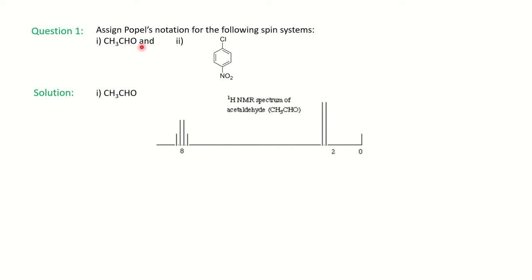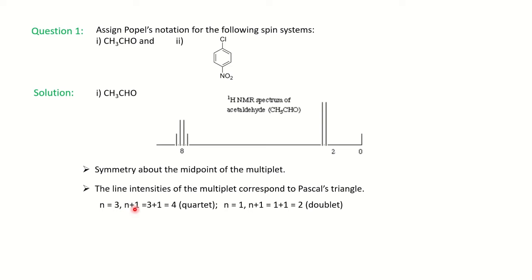So two signals are there with their multiplicity and now we have to see whether it is first order or second order spectra to give the Popel's notation. So we will see first point which we have to see: symmetry about the midpoint of the multiplet. You can notice here, this is the midpoint where I am indicating with the laser. So it is the midpoint and you have a symmetry. Similarly for doublet, you have a middle point and we have a symmetry. So we can say it may be a first order spectra.